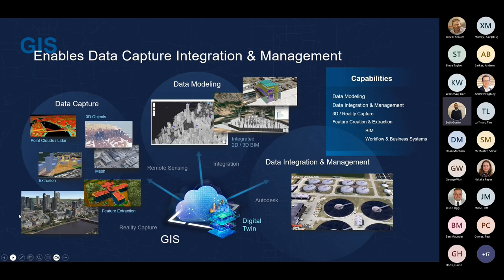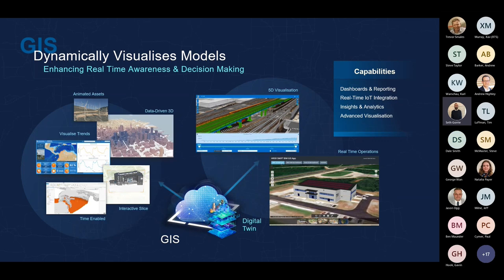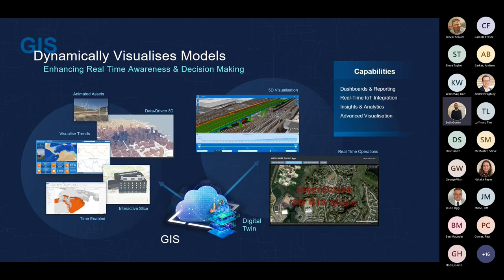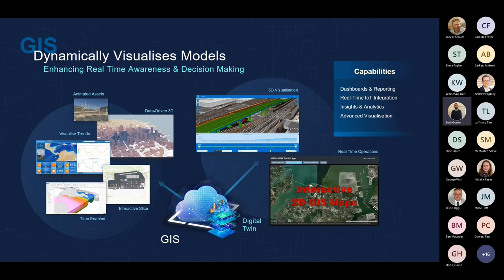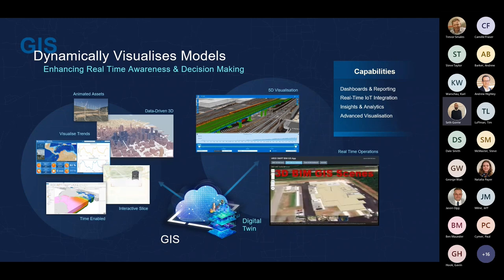The value here is really about expediting people finding the right information in the system of record — such as work orders — and helping people get there faster. Everyone is busy, and being able to wade through a document repository with no visual assistance is quite time consuming. Here we're pivoting to a 2D or 3D map as the visualization aid to launch and link to those other repositories — pretty innovative in many regards.